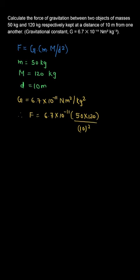So, on solving this further, we will get the force of attraction between two masses of 50 kg and 120 kg, separated by a distance of 10 meter, will be equal to 4.02 x 10 to the power minus 9 N.